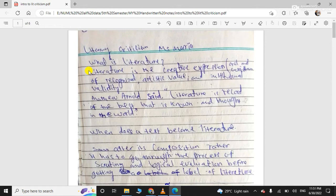First let me give you a definition of literature with a new perspective in literary criticism. Literature is the creative expression, whether oral or written, that has recognized artistic value and institutional validity. A piece of art becomes literature when it has universal recognition, artistic value, and institutional validity.